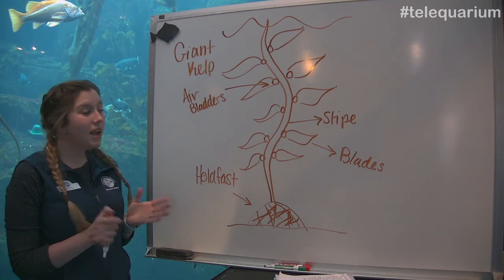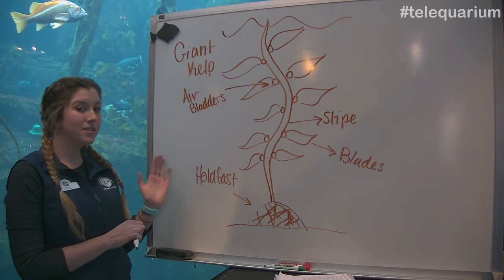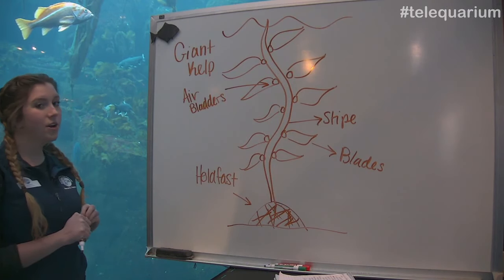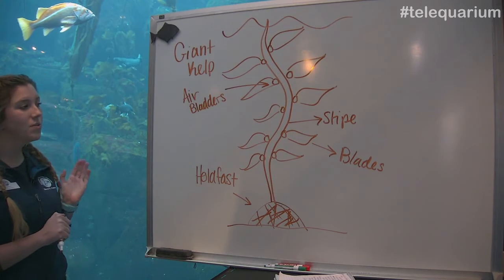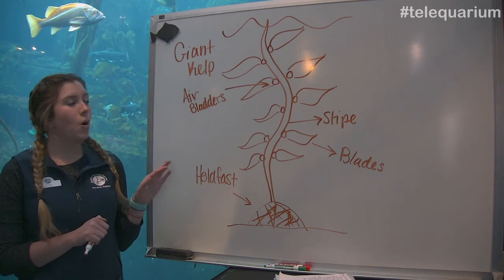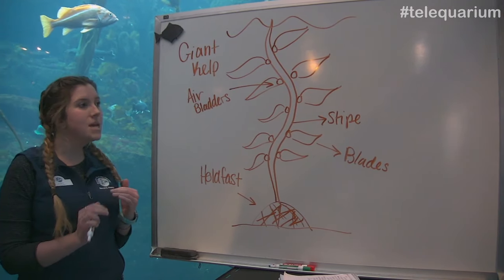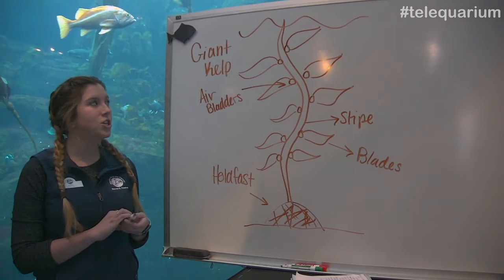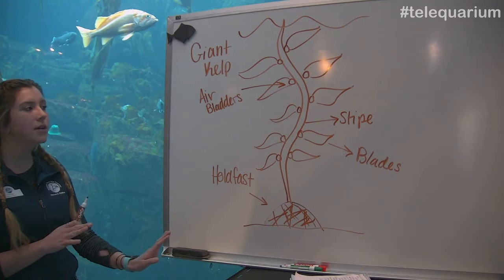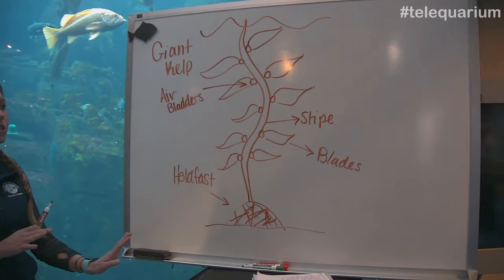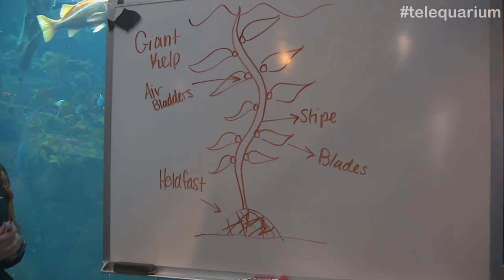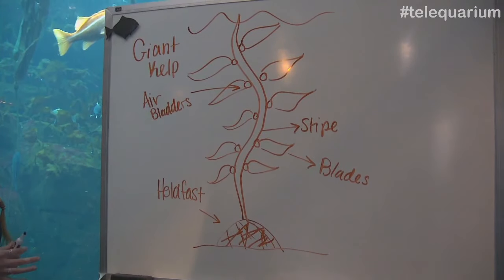Great. So now you should have a basic outline of what algae looks like. We have our air bladders, the stipe, the blades, and the holdfast — these are the main anatomy structures for our kelp. I'll leave this up for just another couple of seconds so you can finish up your drawing, and then we're going to move on to some different types of algae.